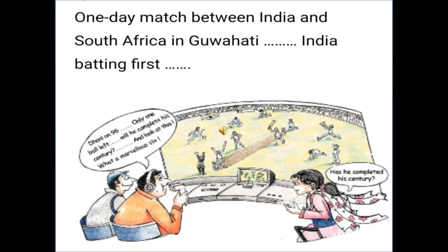So the commentator says Dhoni is on 96. Only one ball left. Will he complete his century? And look at this! What a marvellous six! Has he completed his century? So do you think, was Dhoni able to complete his century? How many more does he need to score a century?